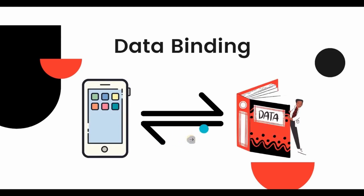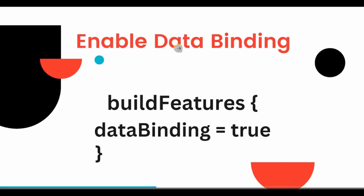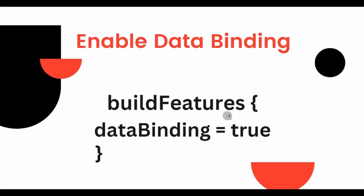In very simple language, it's like giving a variable to a TextView directly in the XML layout. I repeat — variable, not ID. Usually we assign a variable to a particular UI component in the Activity, but in data binding we can directly assign it in the XML layout. This is how we enable data binding in Gradle module: build features, data binding equals true.